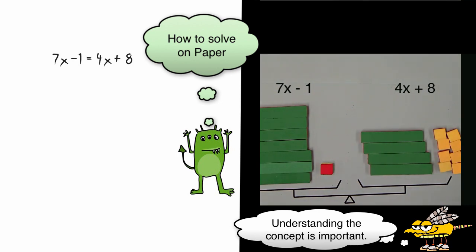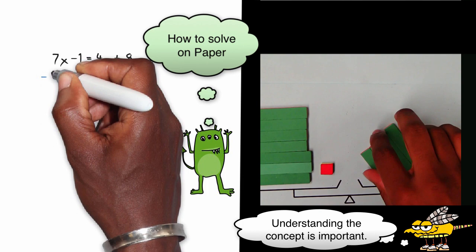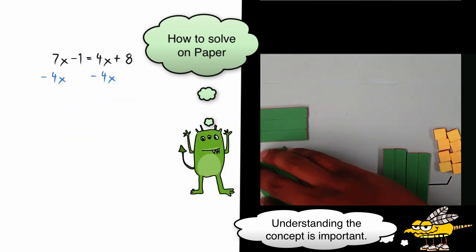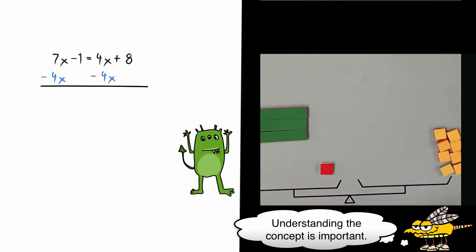Now the goal is to find out how much one of these x's are worth. So looking at both sides, I notice that there's 4x's here and there's 4x's here. And I can simplify the problem by taking away 4x's from both sides. And I'm allowed to do that because the scale will still stay balanced as long as I am removing the same value from both sides.